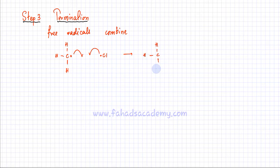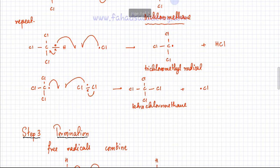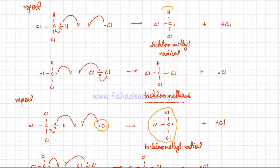So you have all these different free radicals which were being formed in the previous steps, and those free radicals they can either continue on the path of propagation or they can all combine and join up and form different molecules. For example, looking at the previous steps, you have a trichloromethyl free radical, then a Cl radical as well. Here is a dichloromethyl radical formed, and a Cl radical was also present in this particular step.